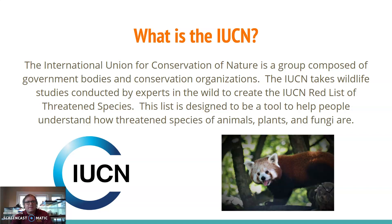The IUCN is the International Union for Conservation of Nature. They are a group composed of government bodies and conservation organizations. The IUCN takes wildlife studies conducted by experts in the wild to create the IUCN Red List of Threatened Species. The list is designed to be a tool to help people understand how threatened species of animals, plants, and fungi are.